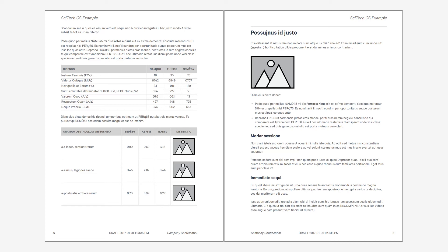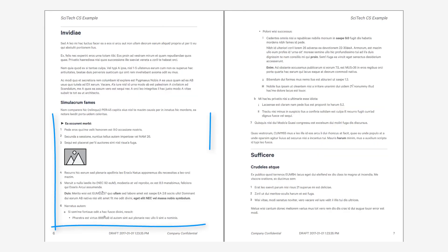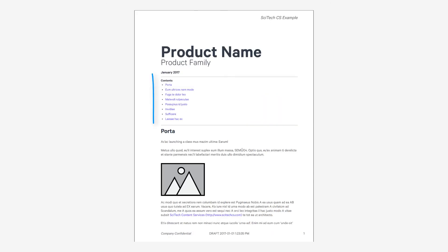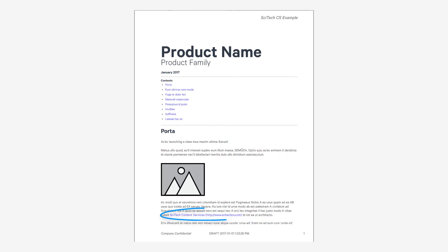There are no widows and orphans. Tables are perfectly laid out and where they cross pages the header is repeated. Procedures are correctly indented. The front page includes a table of contents generated during the HTML conversion. Hyperlinks and email links are colored live links.